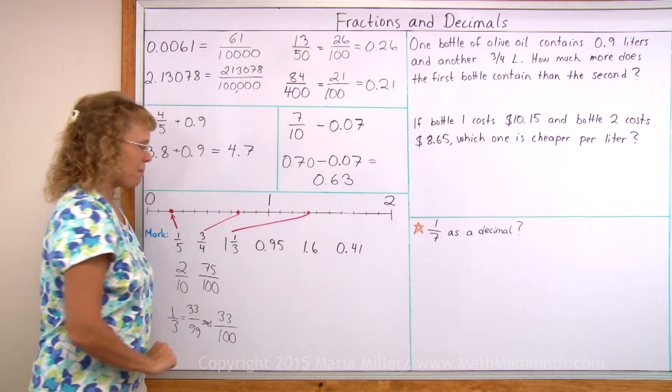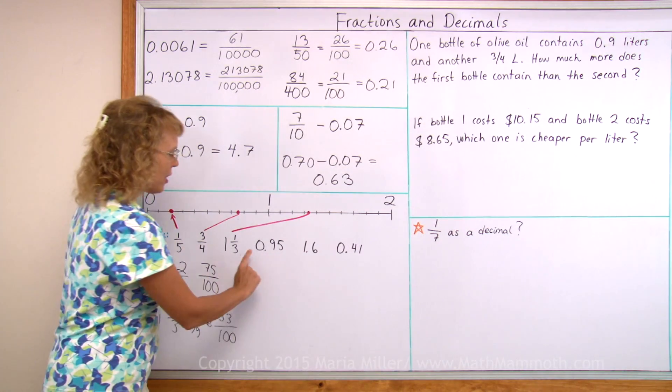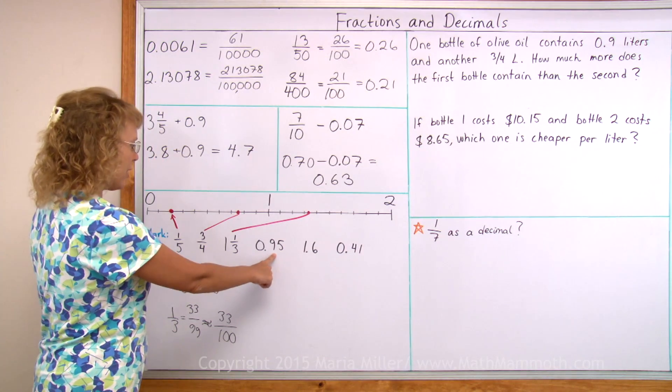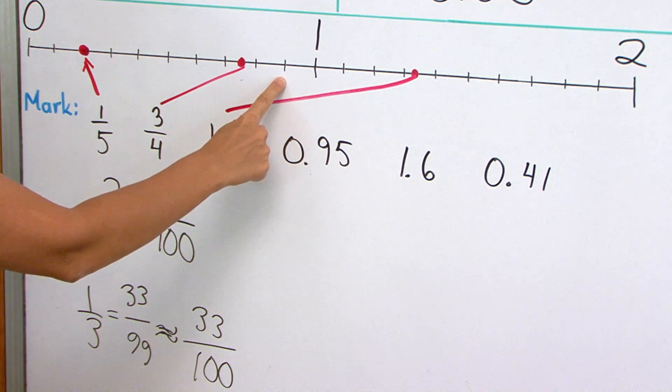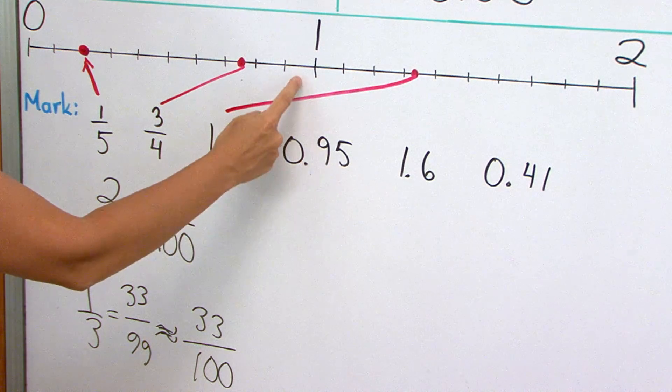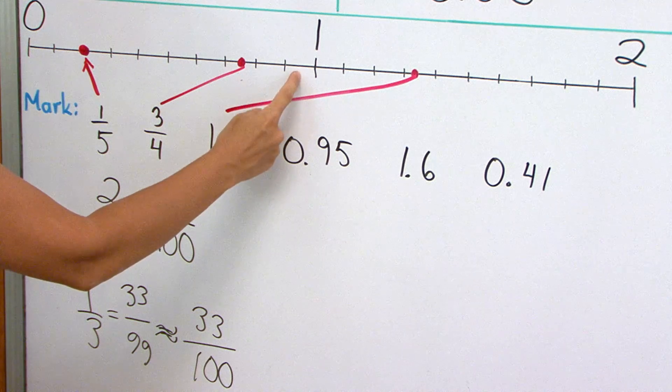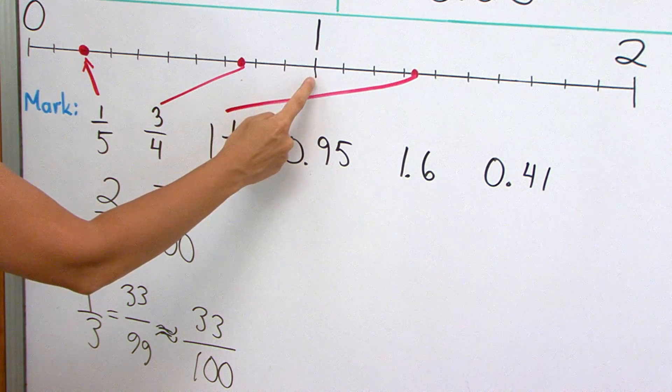Now zero point nine-five. We can find zero point nine first, or nine-tenths, which is right here. And then nine-five, it would be here in the midpoint between nine-tenths and one.